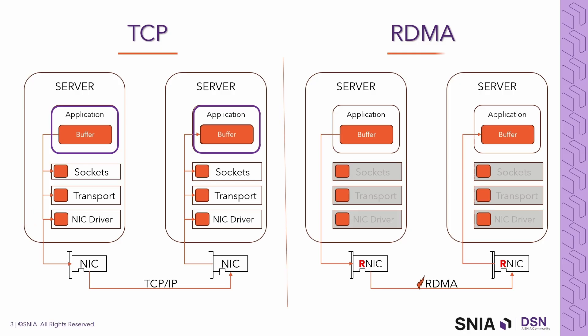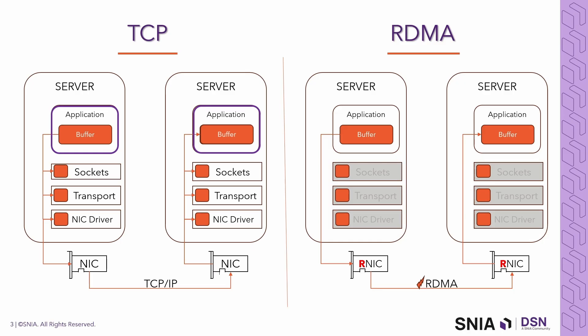On the right, we have RDMA. It bypasses the CPU and kernel and enables the RNIC — the RDMA NIC — to directly access the system memory using a DMA controller. There's no need for per-packet processing in the kernel. The CPU is still involved in setting up the operation, but once that is done, the RNIC takes over, DMAs the packet into its local memory, and performs per-packet processing entirely in hardware, providing high bandwidth and low latency. Pretty cool, right?